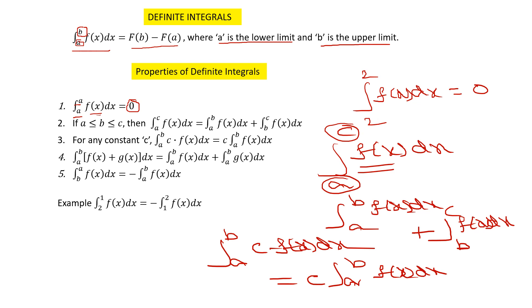Property number four: if I have two functions f(x) and g(x), I can write the integral from a to b of their sum as the integral from a to b of the first function plus the integral from a to b of the second function.